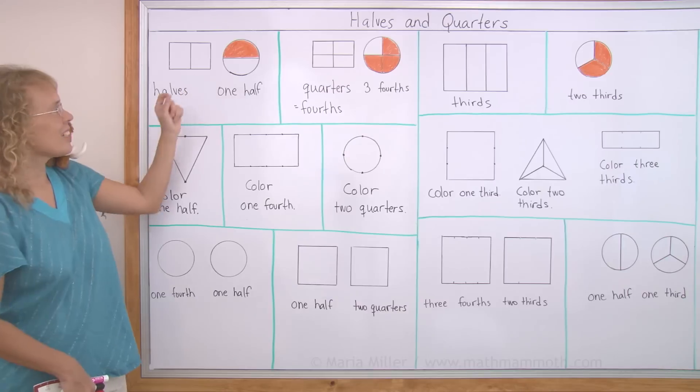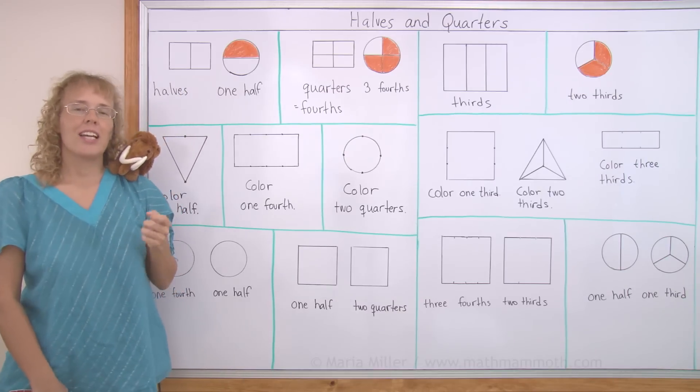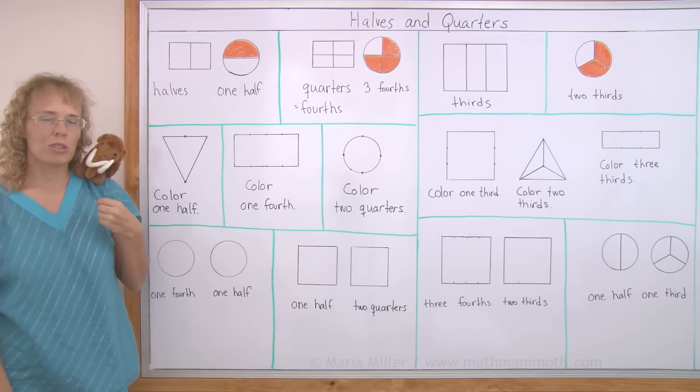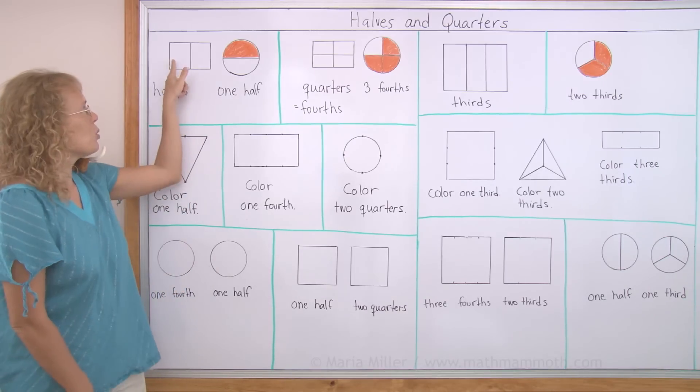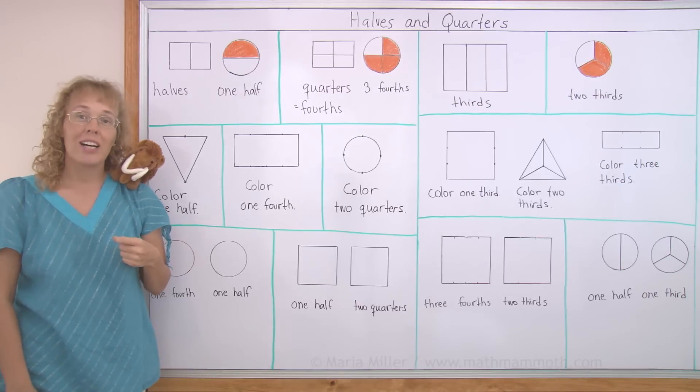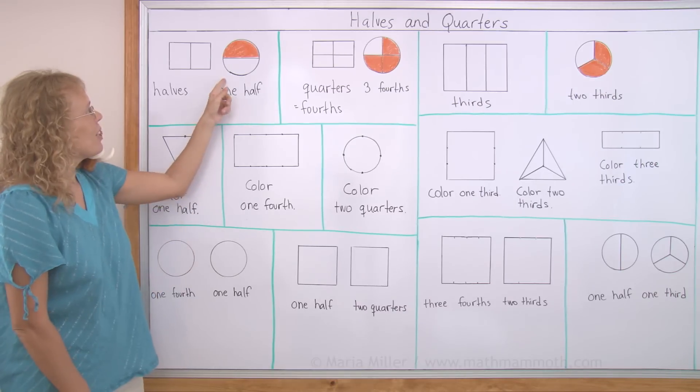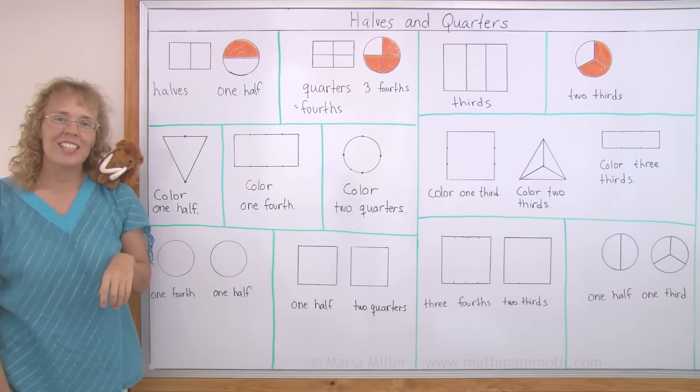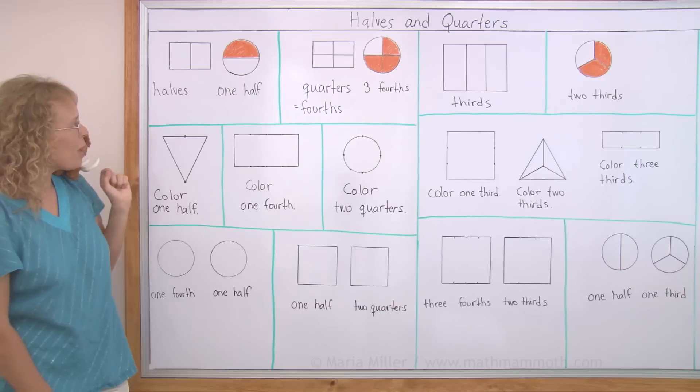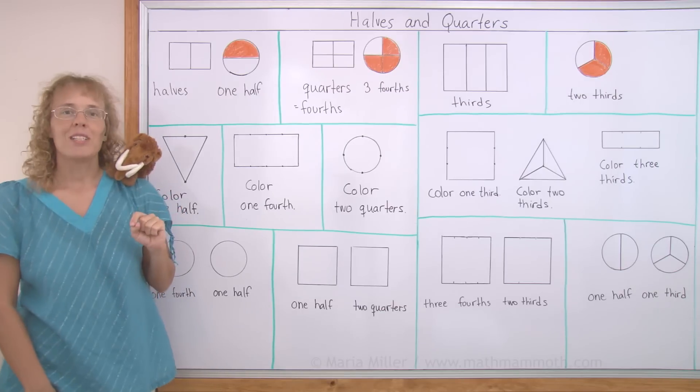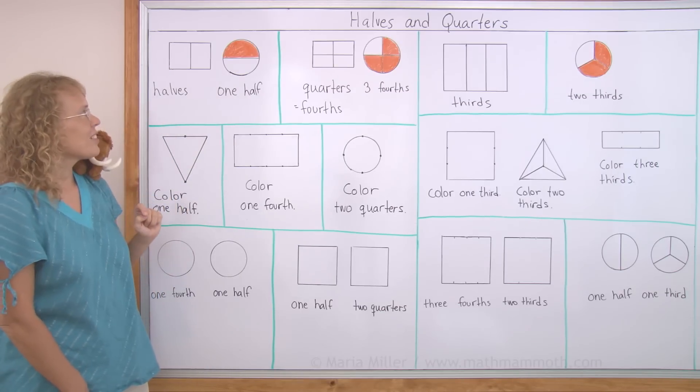Over here, this rectangle is divided in half, or we could say it's divided into two halves, two equal parts, and each part is one half. Over here, this circle is also divided into two halves, but one of those halves is colored. So one half is colored.